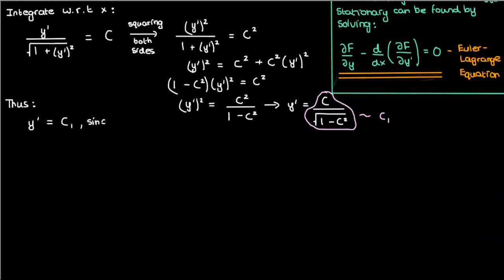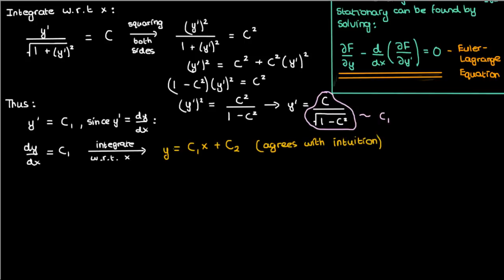Now since y prime is dy by dx, we can determine our stationary function by integrating this constant c1 with respect to x, and in that case we'll find that y is just some constant c1 times x plus some other constant c2, but this is just the equation of a straight line, which agrees with our intuition that the shortest distance between two points on a plane is a straight line.